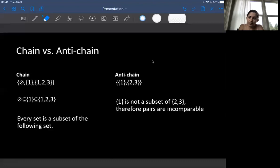And then for an anti-chain, we see the opposite of this, where we have two sets in this set 1 and 2, 3, where 1 is not a set of 2, 3, therefore the pairs are incomparable.